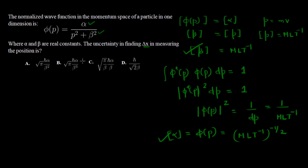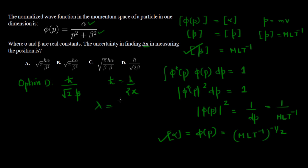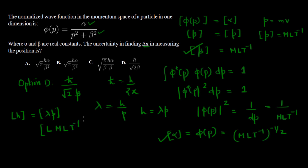Checking option D, we have ℏ/(√2 · β). The dimension of ℏ: from the de Broglie relation λ = h/p, h has dimension of length times momentum, which is ML²T⁻¹. So ℏ also has dimension ML²T⁻¹. Dividing by β (dimension MLT⁻¹) gives ML²T⁻¹ / (MLT⁻¹) = L.